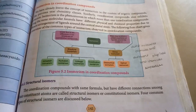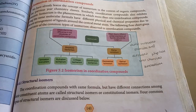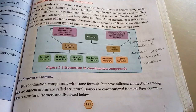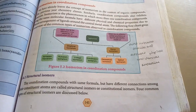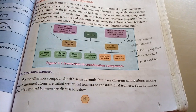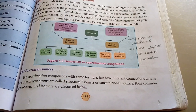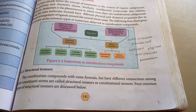First we discuss isomerism in coordination compounds. The definition of isomerism is: same molecular formula but different structural formula, or different physical and chemical properties, such as different boiling points and different freezing points.